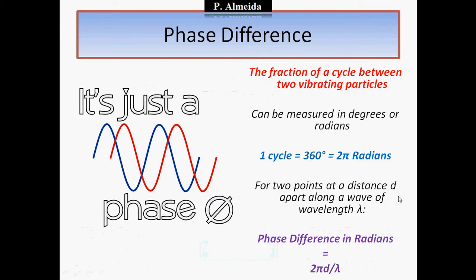Now, something completely new, even if you know all the GCSE wave basics: phase difference. Phase difference, by definition, is the fraction of a cycle between two vibrating particles. It can be measured in degrees or in radians. One complete cycle is a full wavelength, which equals 360 degrees or 2π radians.